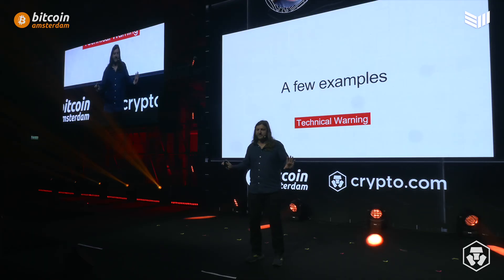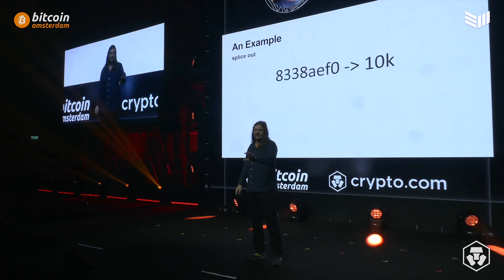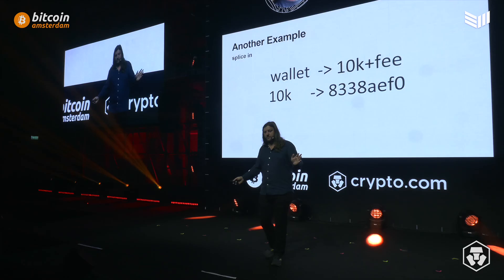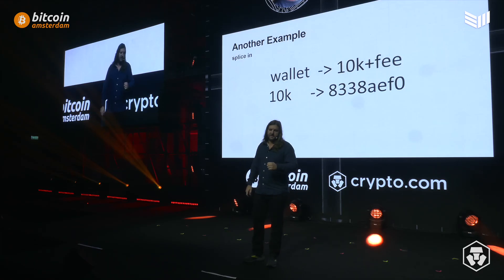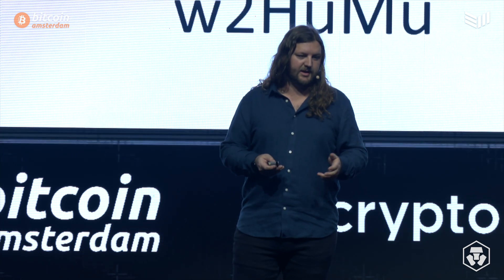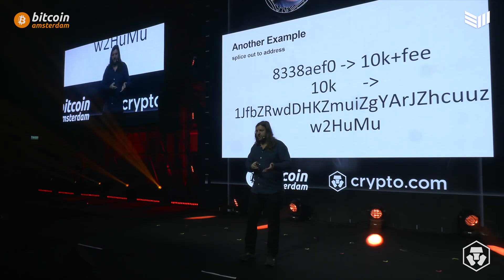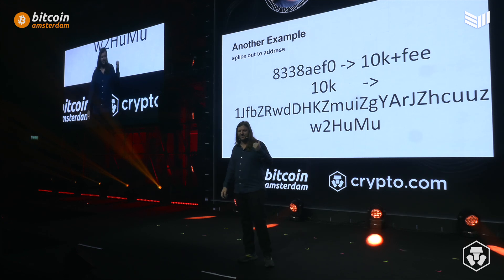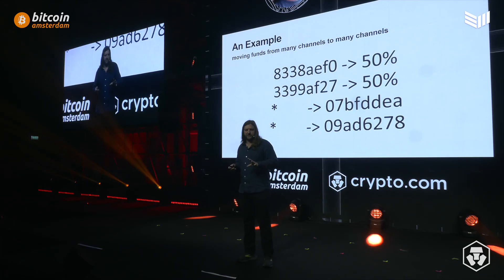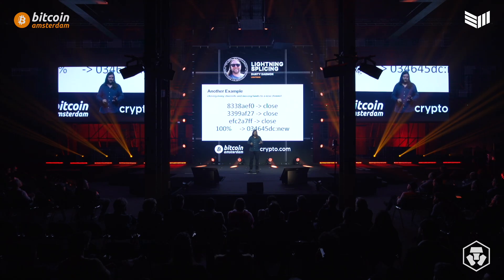Let me go through a few examples to give a visual sense. This is a very simple SpliceScript that does a splice out: a shortened channel identifier, 10,000 sats, take them out, and they go into your on-chain wallet. Here's a splice-in example: taking 10,000 sats from your wallet and putting them into a channel with a given identifier. Here we're splicing funds out onto an on-chain address — this is actually one of Satoshi's old addresses. And they get more complex: here's moving half the funds from two top channels to two bottom channels, or closing three dead channels and putting them into a new channel.